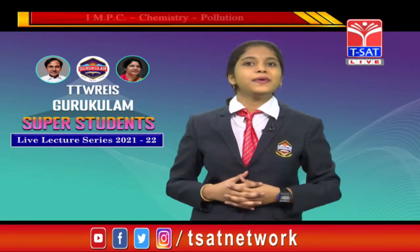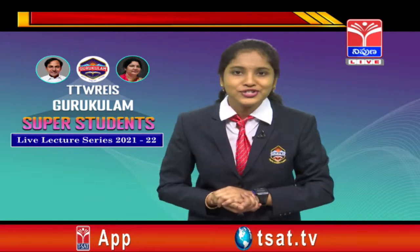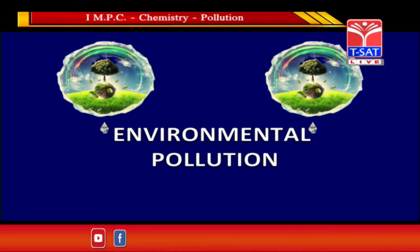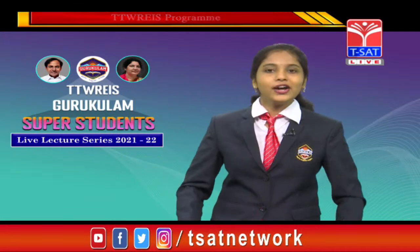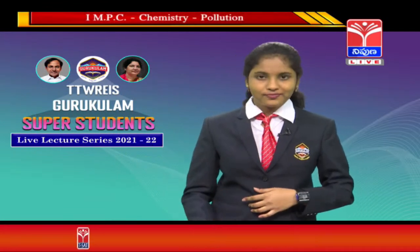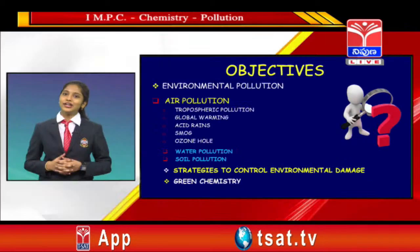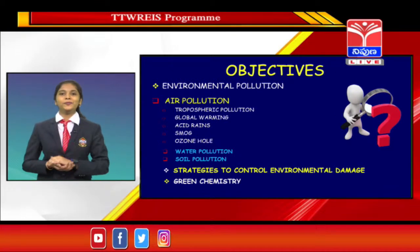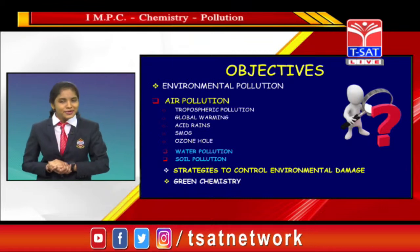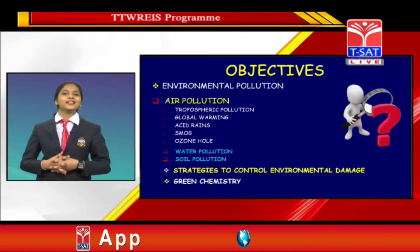Beyond that, those plastic packets were producing many toxic gases, affecting the air, water, and surroundings. The reason behind it is the excess usage of plastic and natural resources, which led to environmental pollution. Today's objectives include air pollution, atmospheric pollution, acid rains, global warming, smog, water pollution, soil pollution, strategies to control environmental damage, and green chemistry. Due to lack of time, we will be discussing only about air pollution.